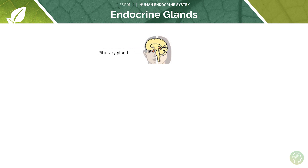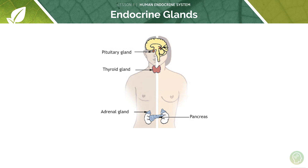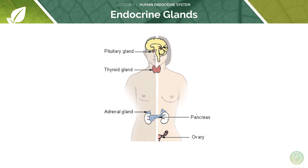Your exam board also requires you to know where various endocrine glands are located in the body. The pituitary gland is found in the brain, the thyroid gland is found in the neck, and the adrenal glands are found above the kidneys — a good memory aid is that 'renal' is the medical term for kidney and 'ad' means above, so adrenal means above the kidneys. You also have the pancreas, ovaries and testes. You'll need to commit these to memory as you could be given a diagram and asked to label particular glands. We will cover each of these organs and their functions in subsequent tutorials.